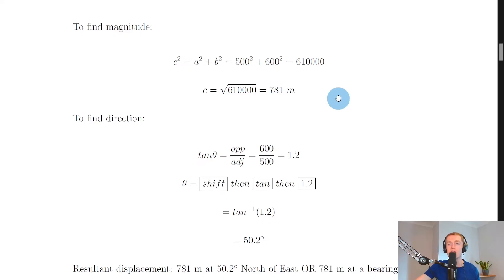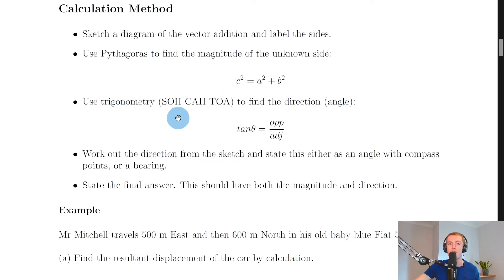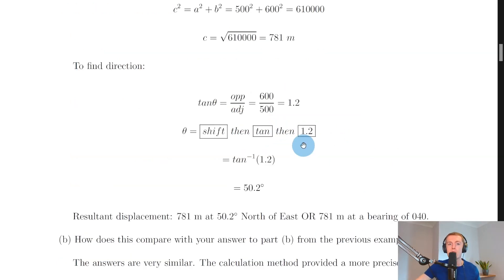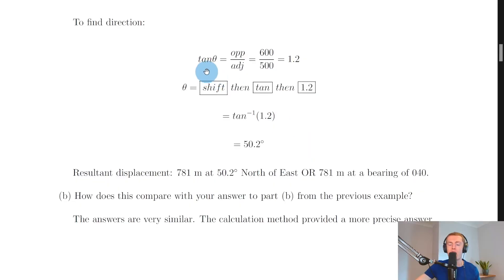The next step is to use trigonometry, i.e. SOH CAH TOA, to find the direction, i.e. the angle. So we can use tan θ = opposite/adjacent, and it's always going to be tan θ, not sin θ or cos θ. It's always tan θ that we use because we'll find that when we do this, we always have the opposite and the adjacent sides.